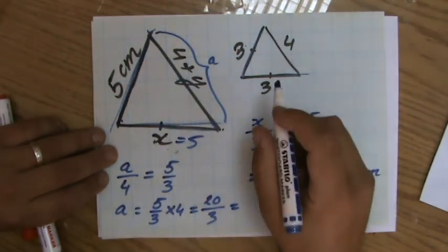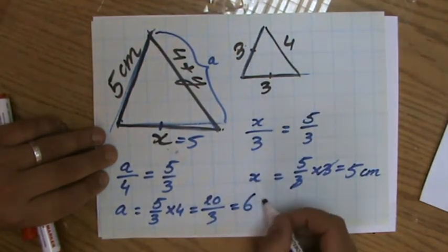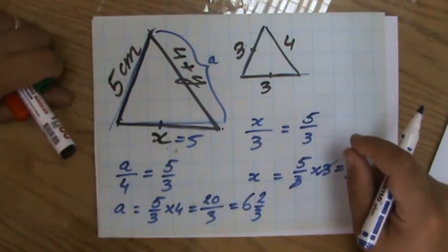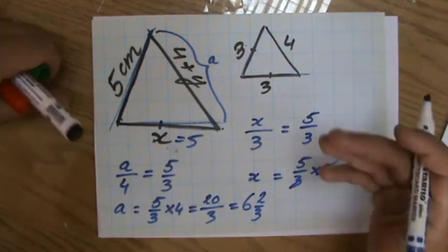So A equals five over three times four, which is 20 over three. Yeah. Which is, it's not seven, is it? So it's going to be six, 18, two over three. Yeah. Six point six repeating. But please, guys, just say,